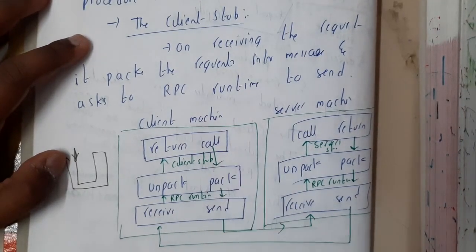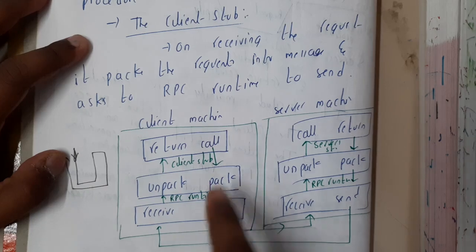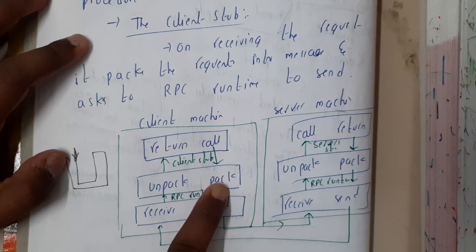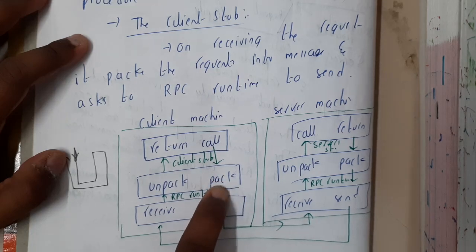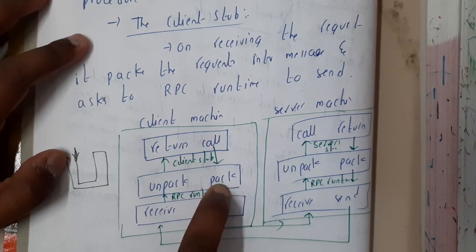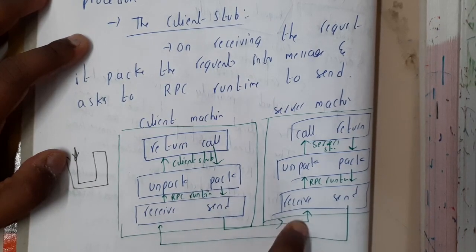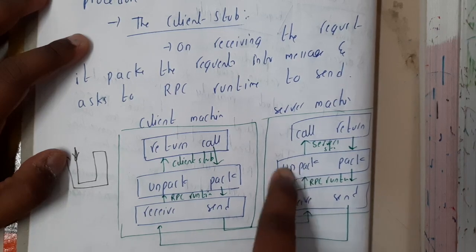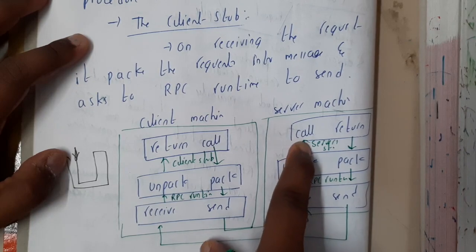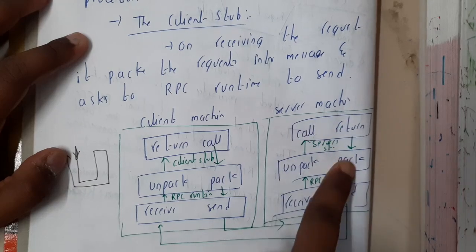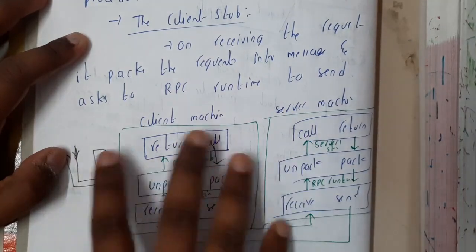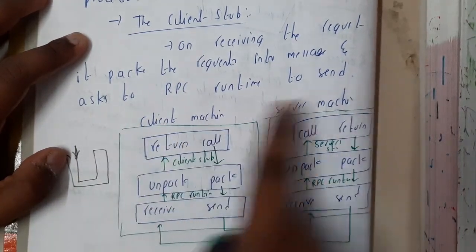On receiving the request, the client stub packs the request into a message and asks the RPC runtime to send it. The flow is: you call → client stub does packaging → the packet is shared using the RPC runtime → sent to the server side → the server receives it → passes it to unpacking → the result is returned. Then packing is done again, sent back, unpacking is done, and the result is returned to the client.